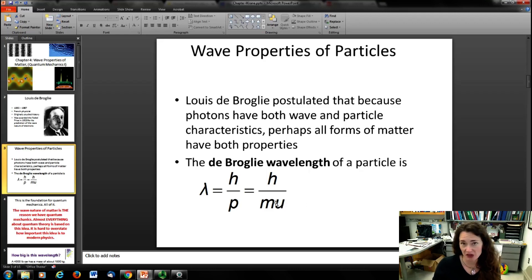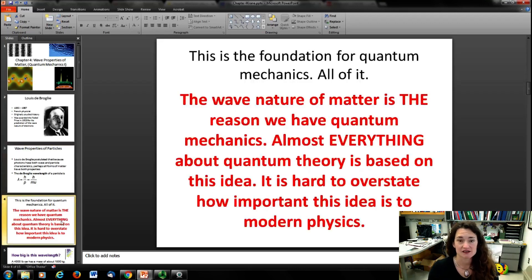So it's a very simple idea, the fact that since photons have a wave and a particle nature, that maybe matter also has a wave and a particle nature. But this simple idea is the foundation for quantum mechanics, all of it. Okay, the wave nature of matter is really the reason that we have quantum mechanics.